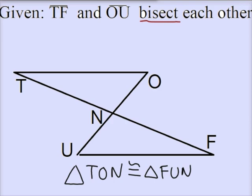In other words, TF refers to that long segment. TF is cut into two equal parts. Similarly, OU is cut into two equal parts.